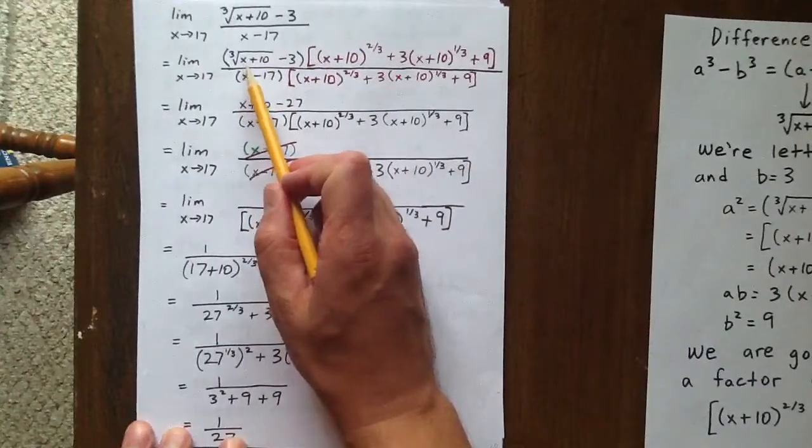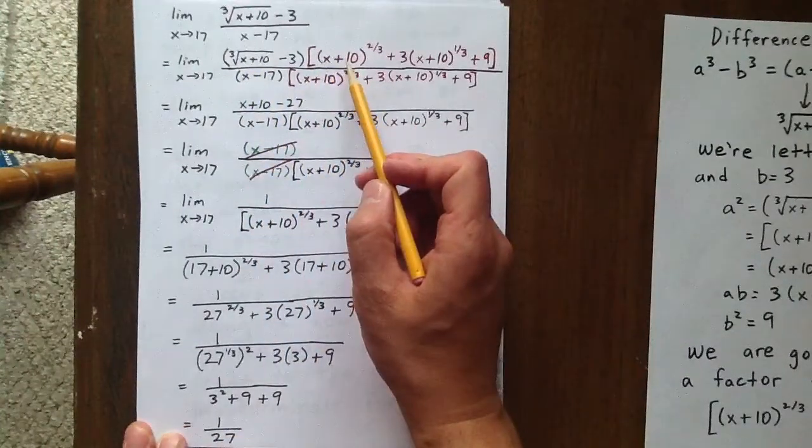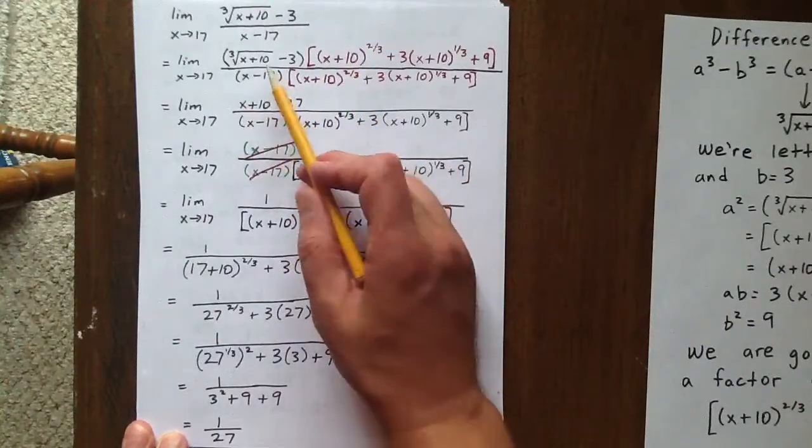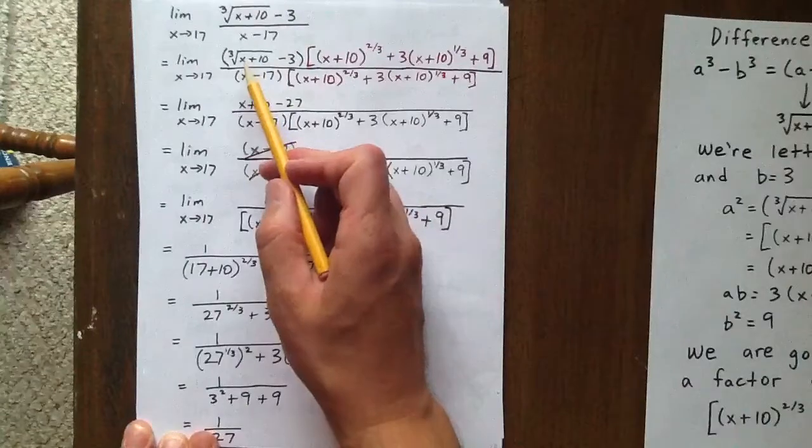The cubed root of x plus 10 times x plus 10 to the two-thirds is x plus 10. These middle terms are all going to cancel out.